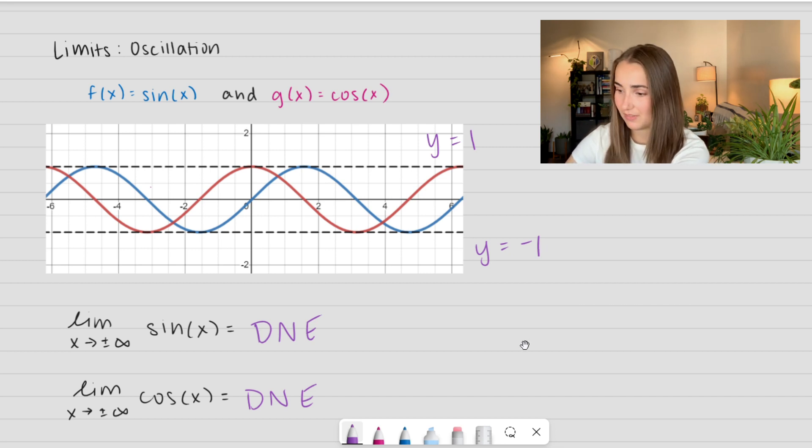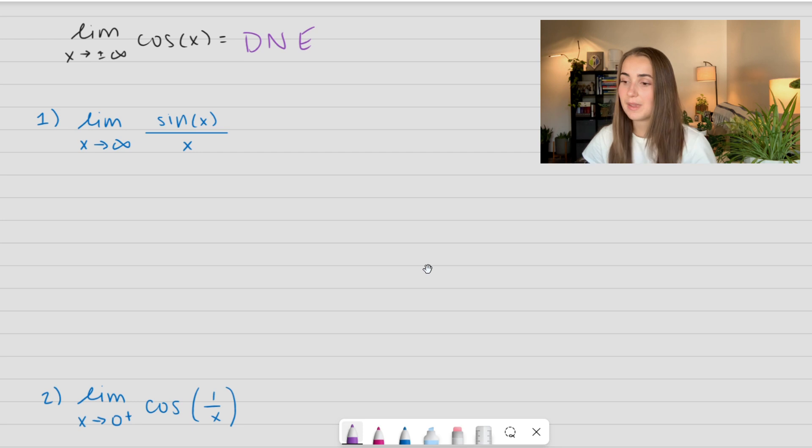So let's go ahead and view some examples of this. First, we have the limit as x approaches infinity of sine of x divided by x. So let's go ahead and look at our numerator. We know as x goes to infinity, this is going to be oscillating between negative 1 and 1. So what I mean by that bracket is that it's some number between negative 1 and 1.